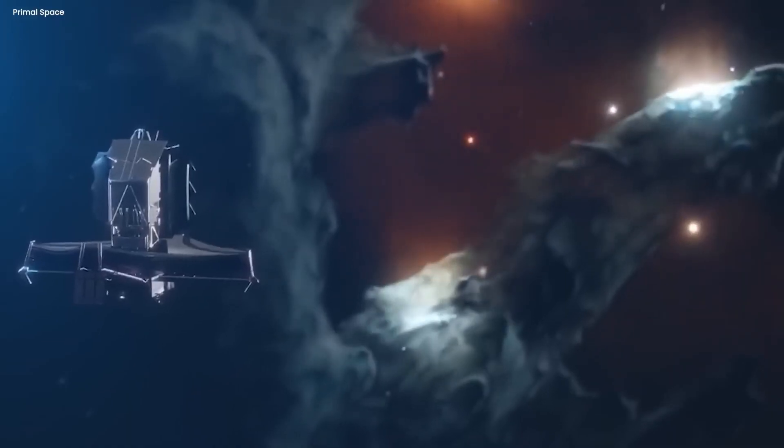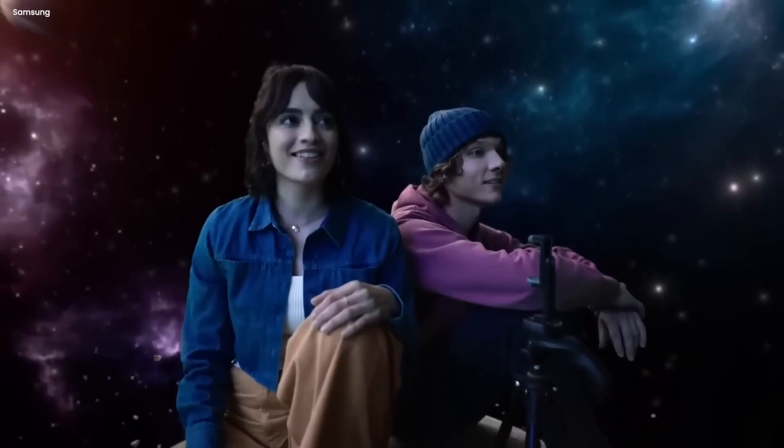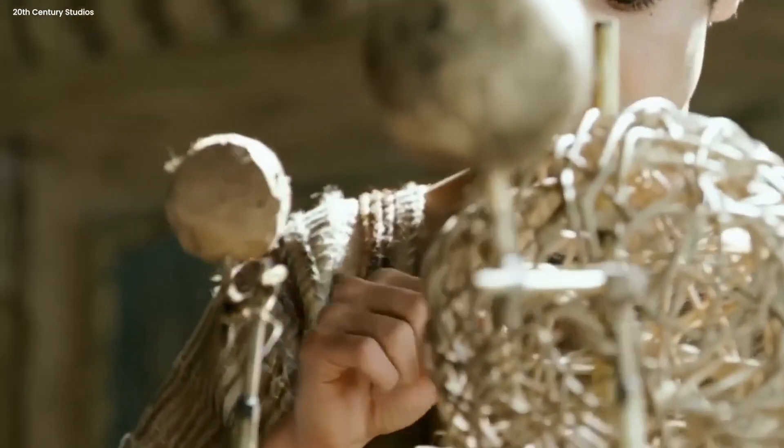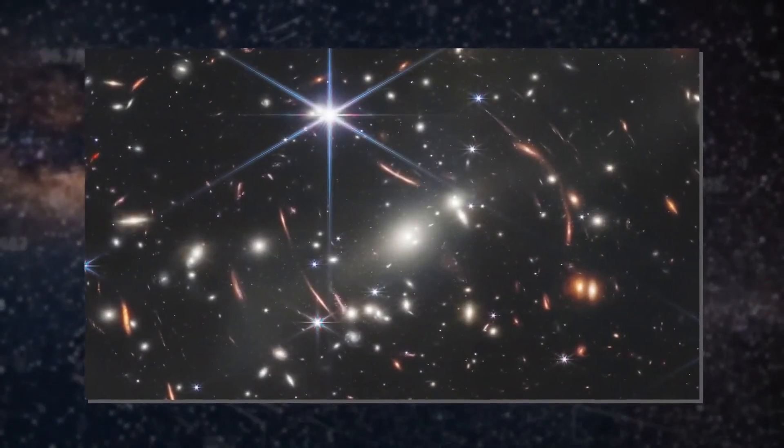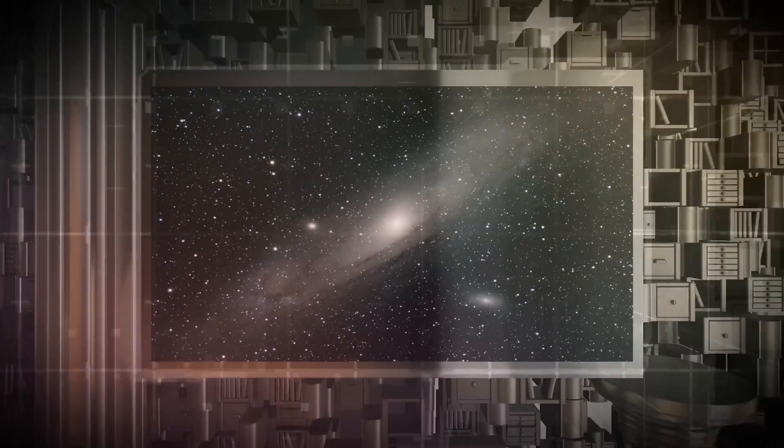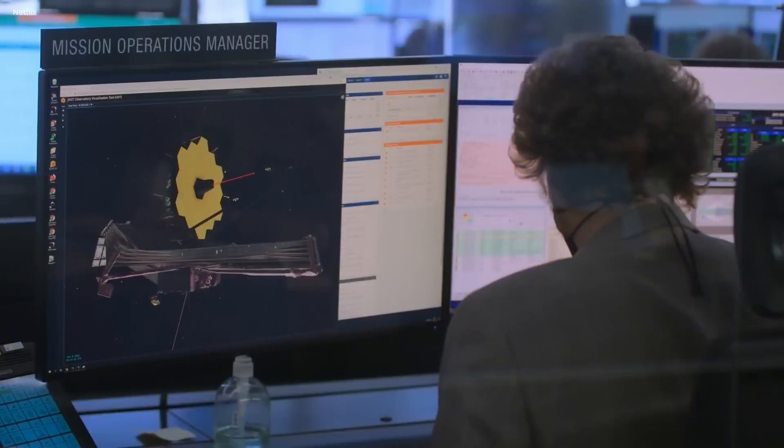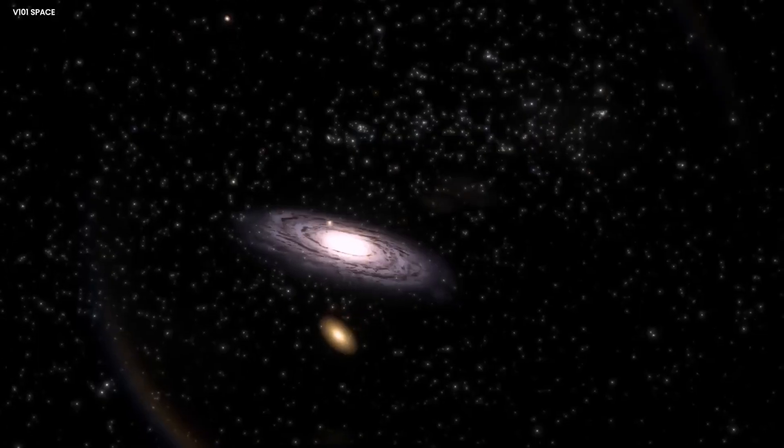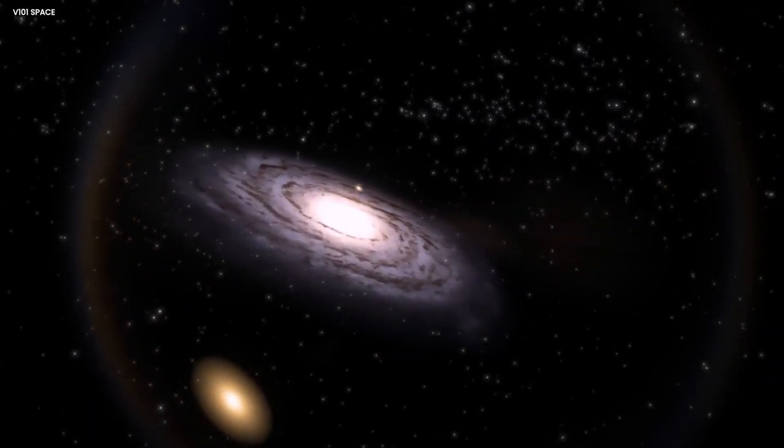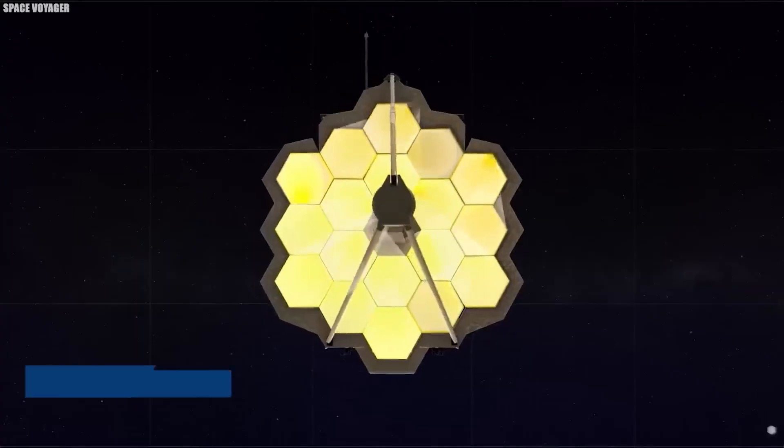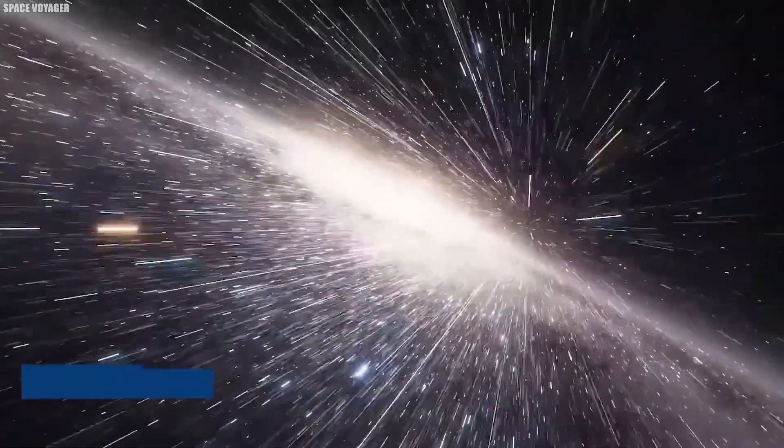In a monumental development, the James Webb Telescope, perched at the forefront of astronomical exploration, has intercepted a signal of unprecedented significance emanating from the distant Andromeda Galaxy. This cosmic communication has set the scientific world ablaze with anticipation, sparking a frenzy of speculation and intrigue. Could this be a cosmic anomaly or a sign of intelligent life beyond our solar system?